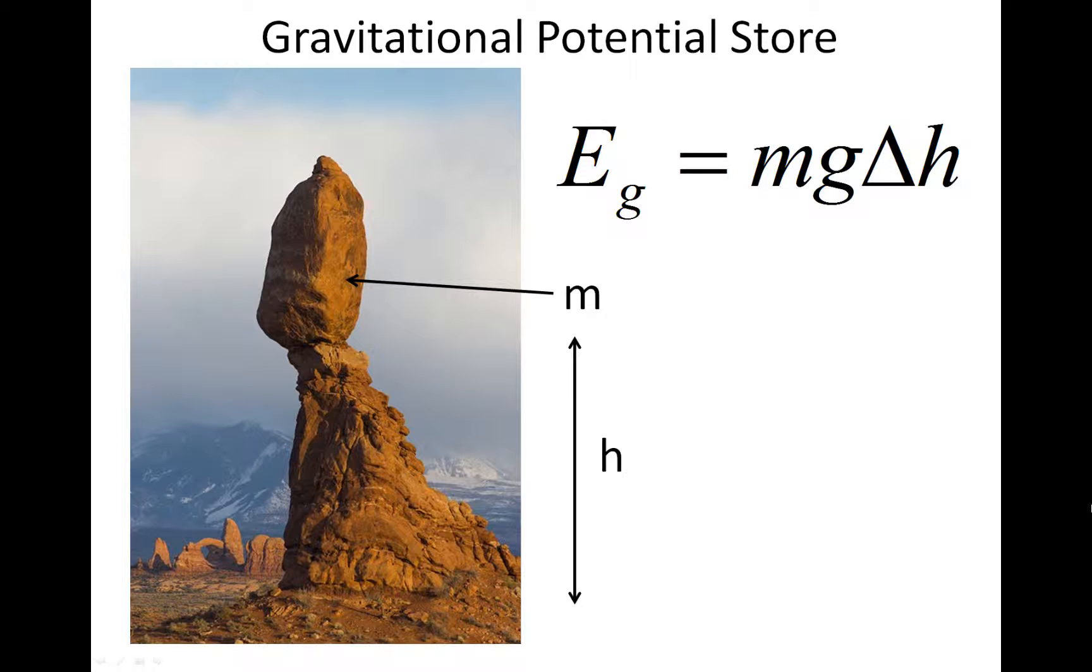Eg, which means energy gravitational, is equal to mg∆h, where m is the mass of the object, g is the gravitational field strength, which is different on different planets, and ∆h is the change in height, where delta means change in and h is height.